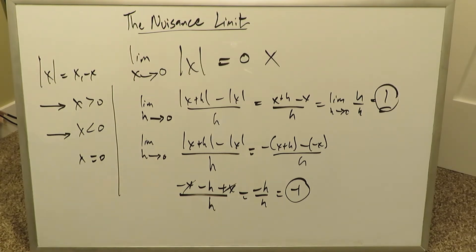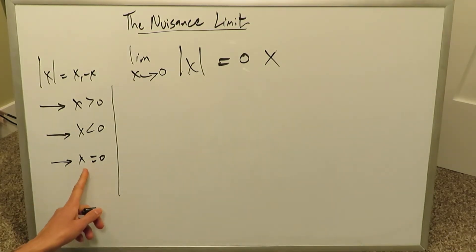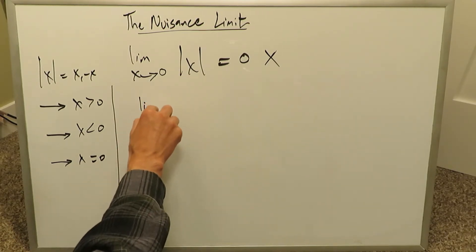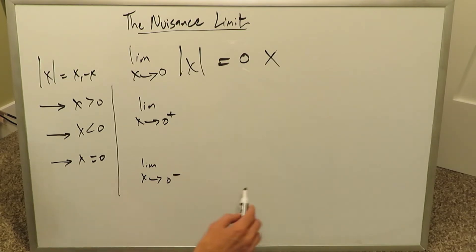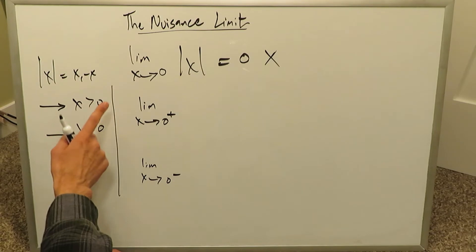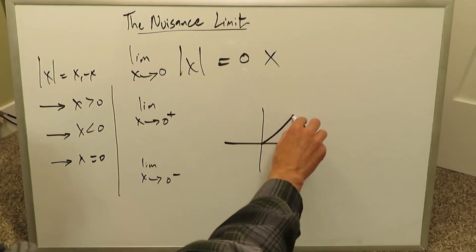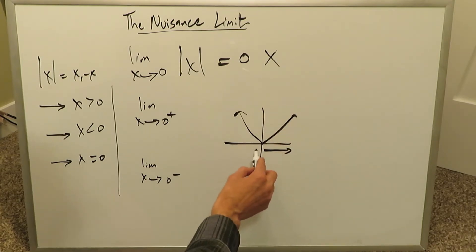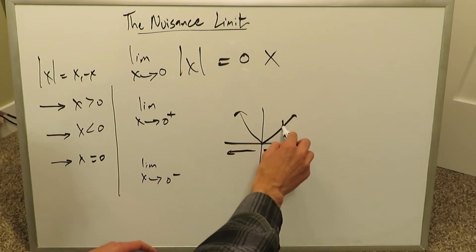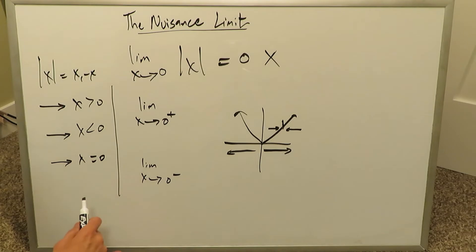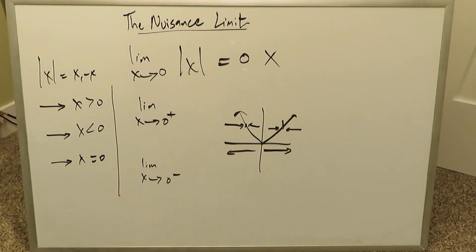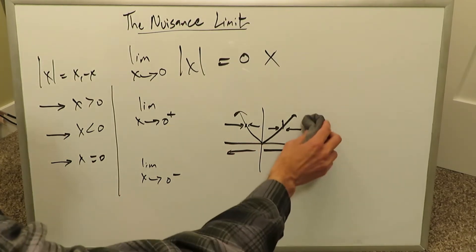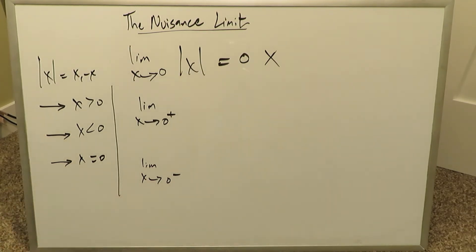For x larger than 0 we get 1, and for x less than 0 we get minus 1 — there's nothing wrong with that. The problem arises right here, which is the crux of this video. When you examine this specific limit for x equal to 0, you have to evaluate approaching 0 from the right and then from the left. It didn't matter for the other two cases, because at any point on those regions the limit is the same from both sides. But at x equals 0, where there's a corner — a kink — you have to pay special attention.